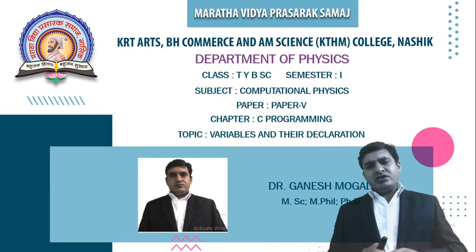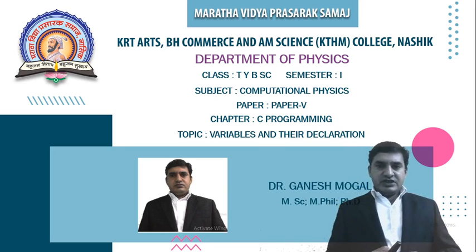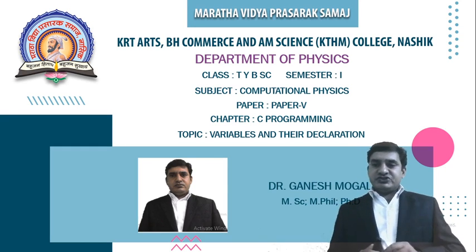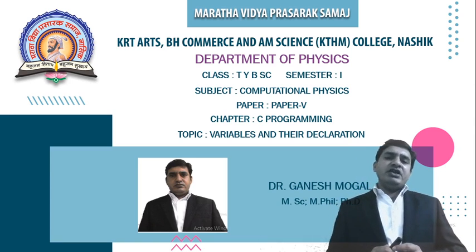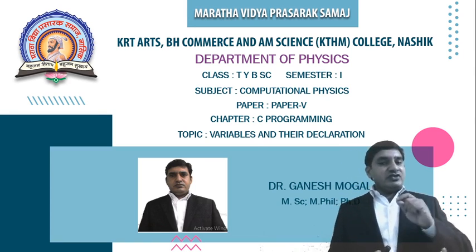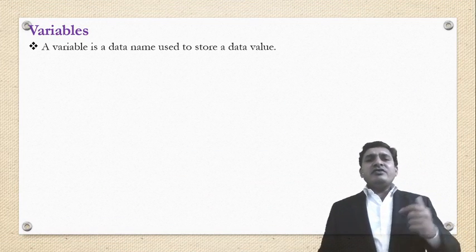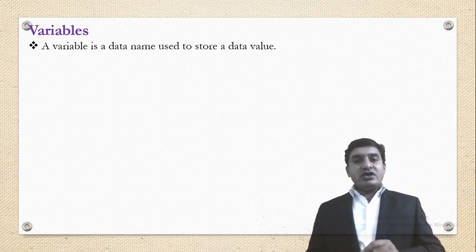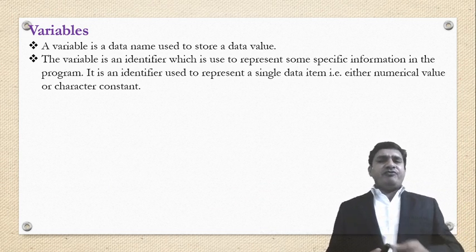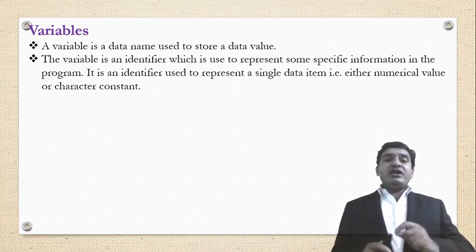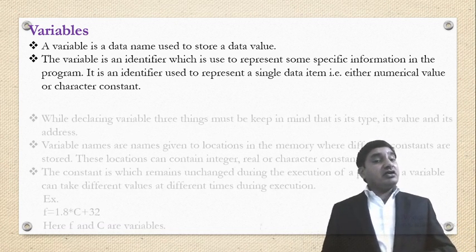While declaring a variable, we should keep in mind that there are different data types — integer, float, and character — and the name of a variable should not be a keyword. A variable is a data name used to store a data value. It is an identifier used to represent some specific information in the program — either a numerical value or a character constant.